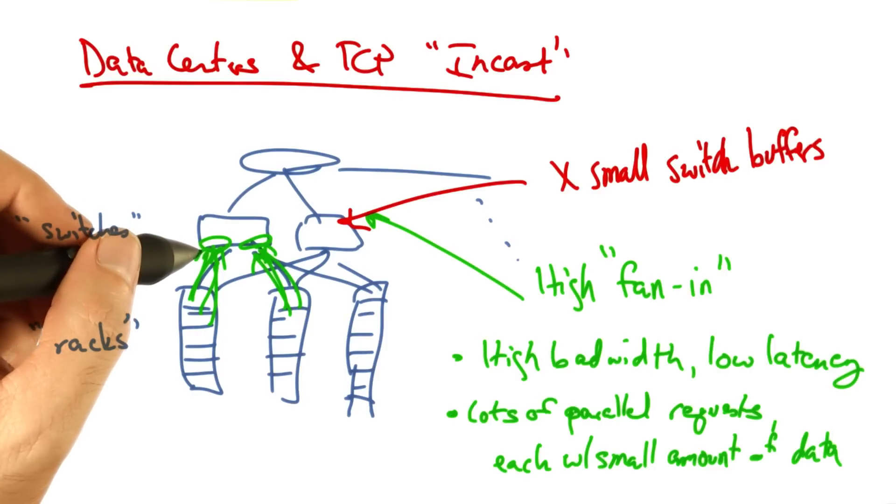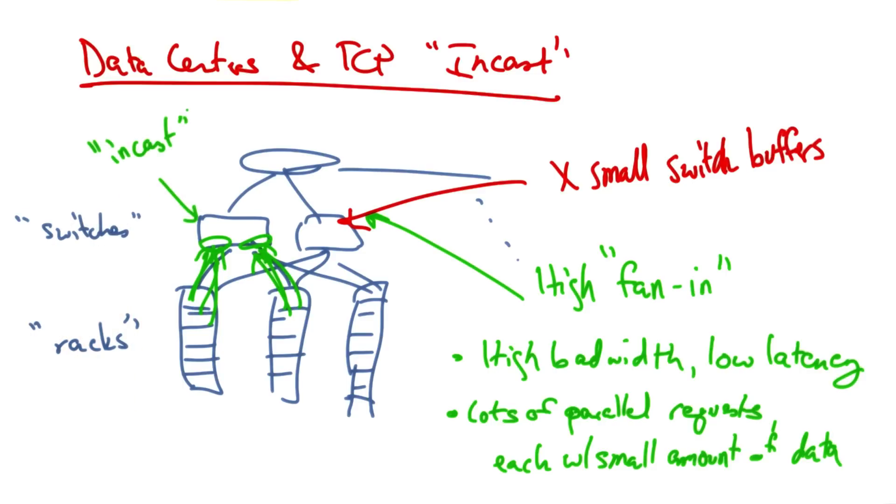The throughput collapse that results from this phenomenon is called the TCP incast problem. Incast is a drastic reduction in application throughput that results when servers using TCP all simultaneously request data, leading to a gross underutilization of network capacity in many to one communication networks like a data center.